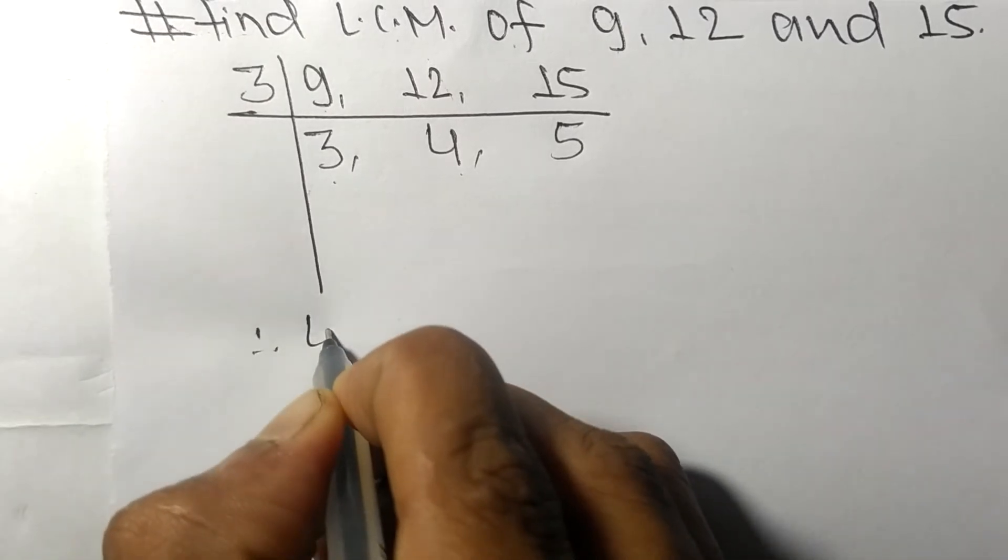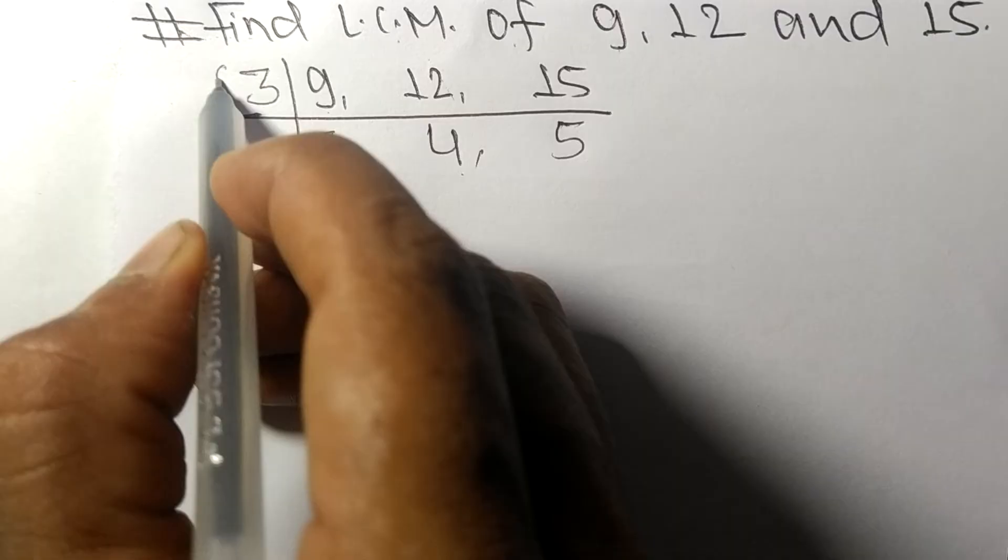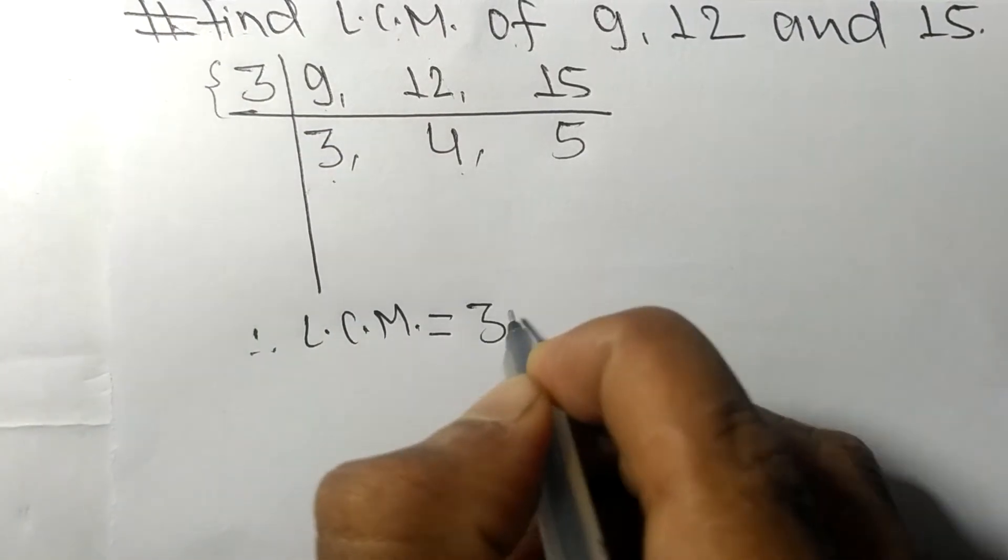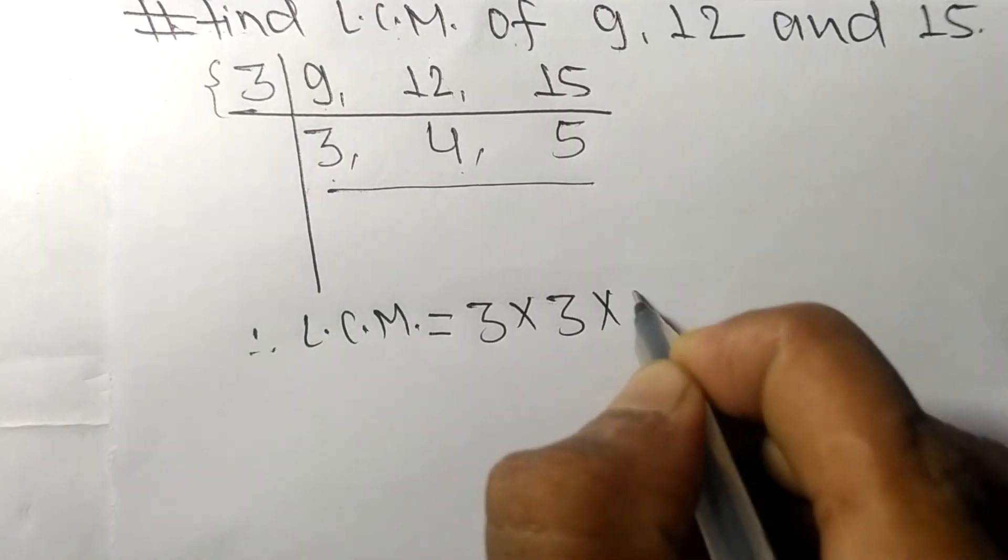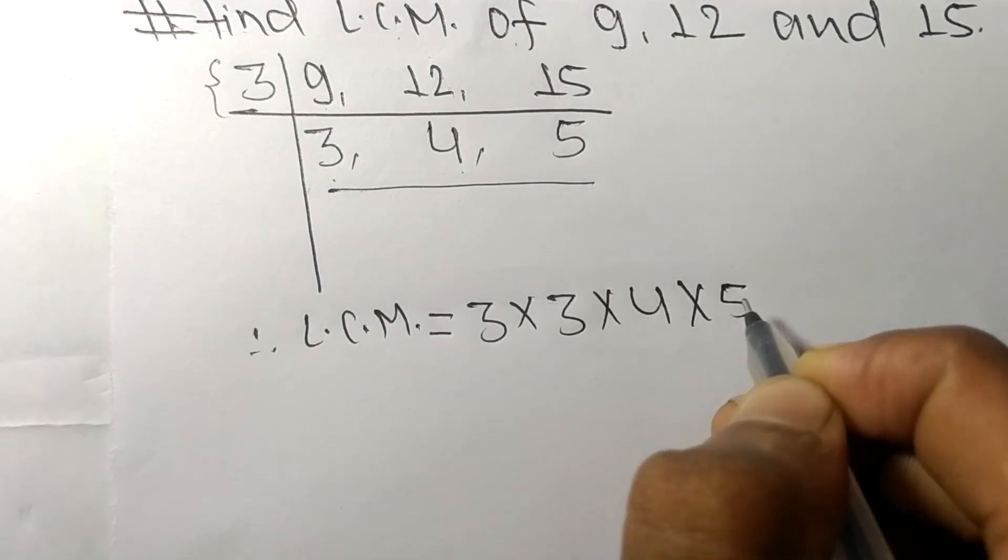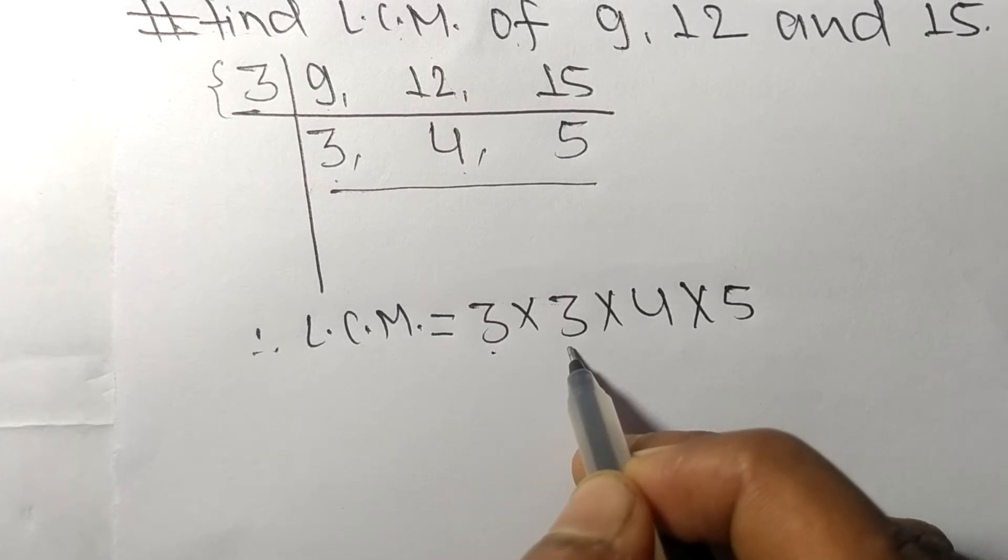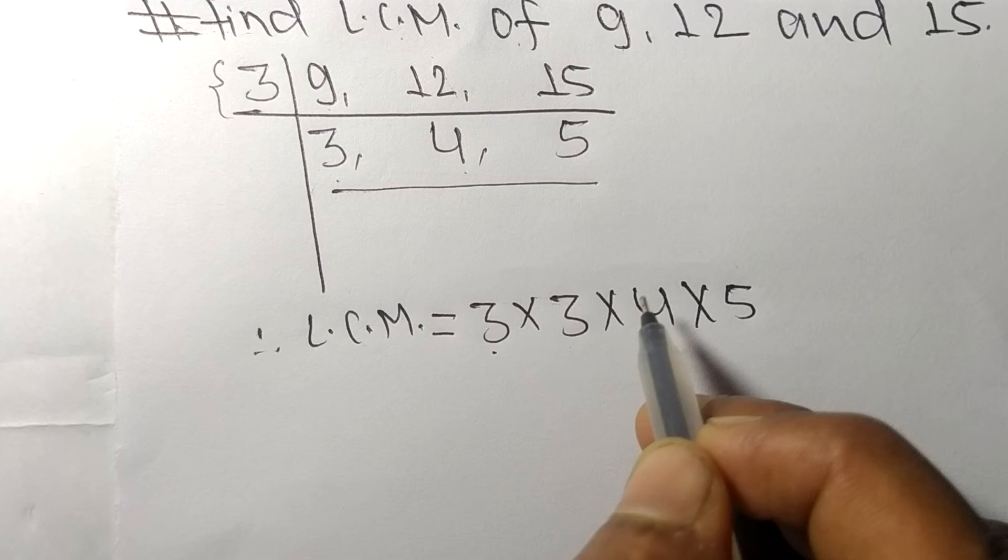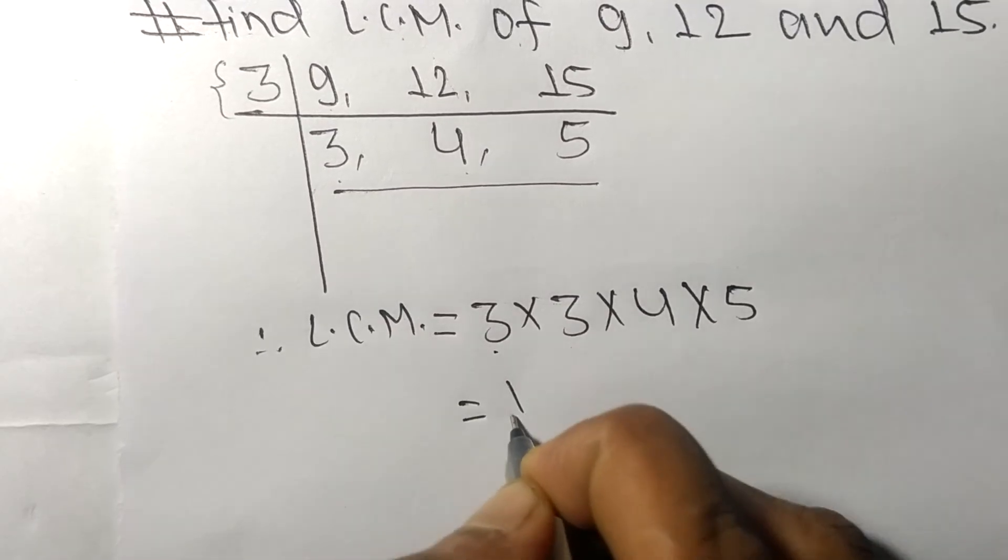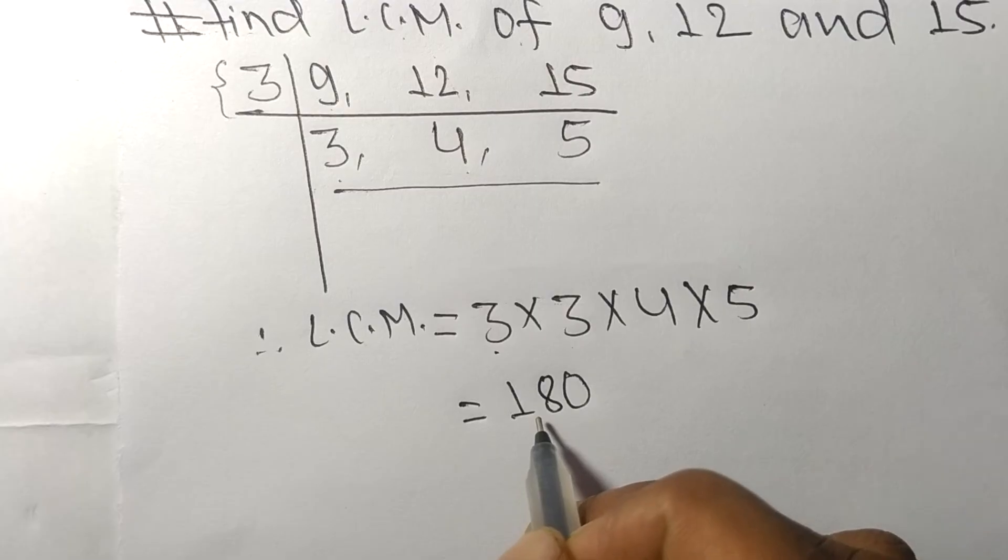Therefore, its LCM is equal to 3 times 3 times 4 times 5. 3 times 3 means 9, 9 times 4 means 36, 36 times 5 means 180.